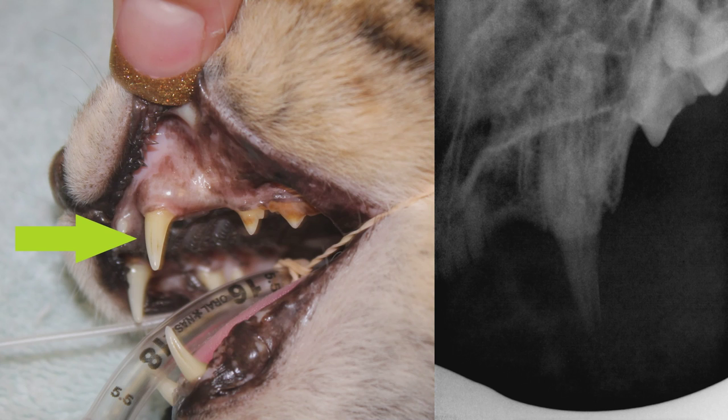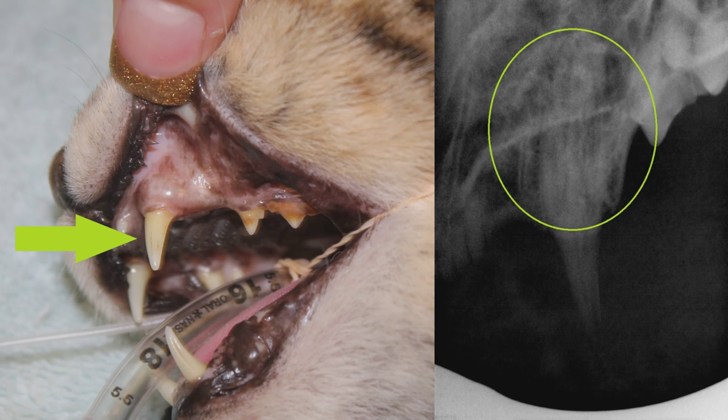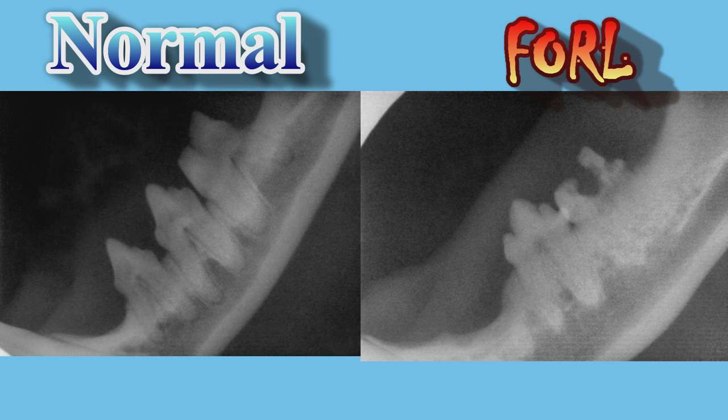Here is an example. The tooth on the left looks normal, but the radiograph on the right shows that it is mostly gone — that tooth is ready to snap off. These radiographs on the left are of normal teeth, and these on the right are of teeth with resorptive lesions. You can see how the roots and crowns on the abnormal teeth are disappearing.